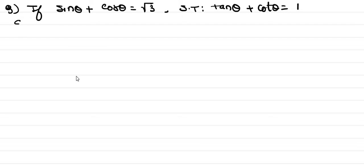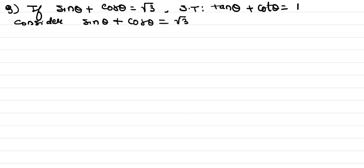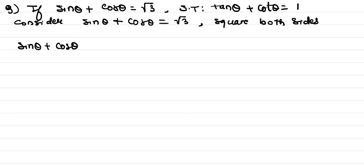We start by considering sin θ + cos θ = √3. We square both sides, so this becomes (sin θ + cos θ)² = (√3)².